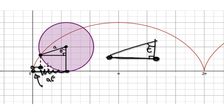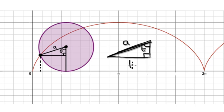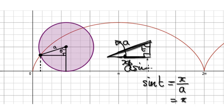Here we've got a right angle triangle where the angle is t and the radius of the circle is a. This length here is sine, so sine of the angle equals what we're trying to find. In this case the angle is the time, so sin(t) = x/a, meaning this length here is a·sin(t).